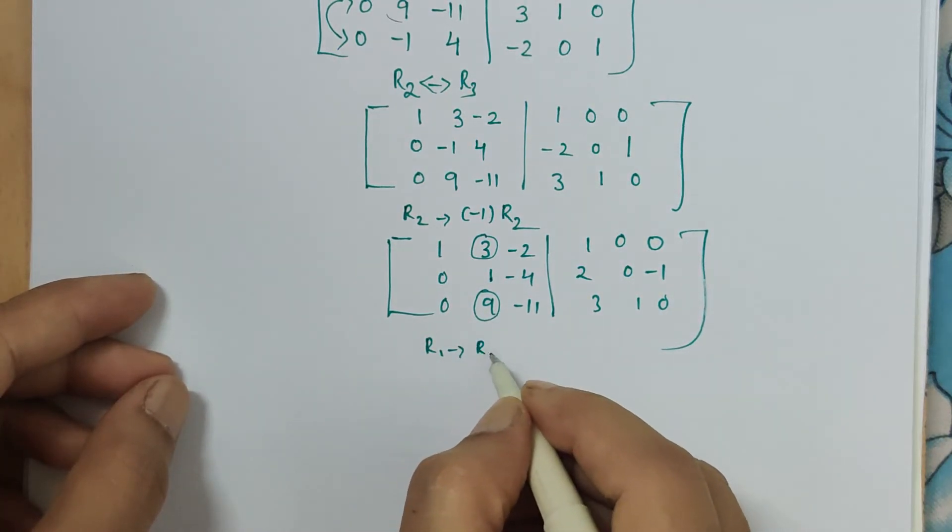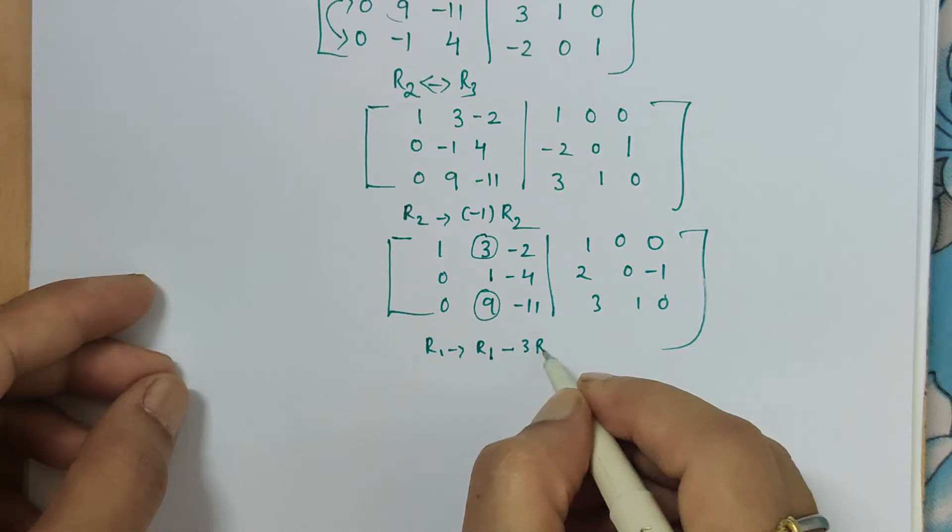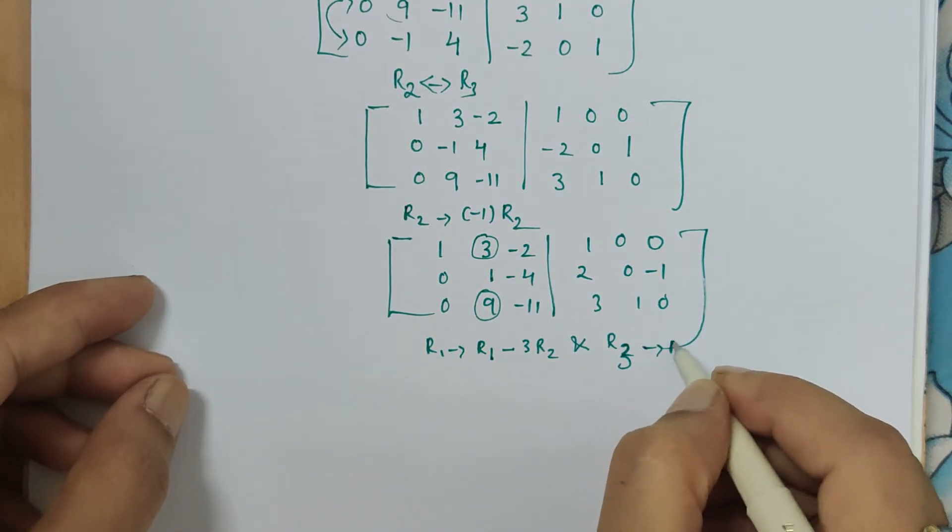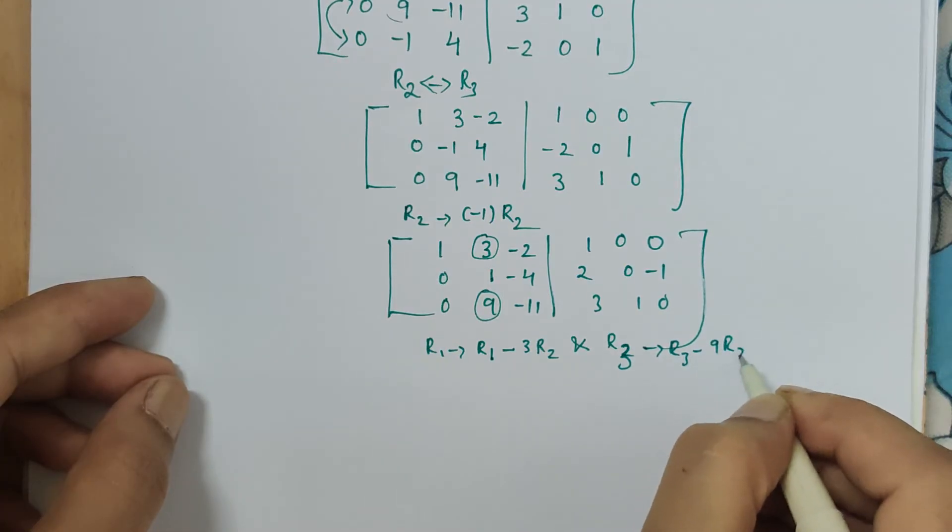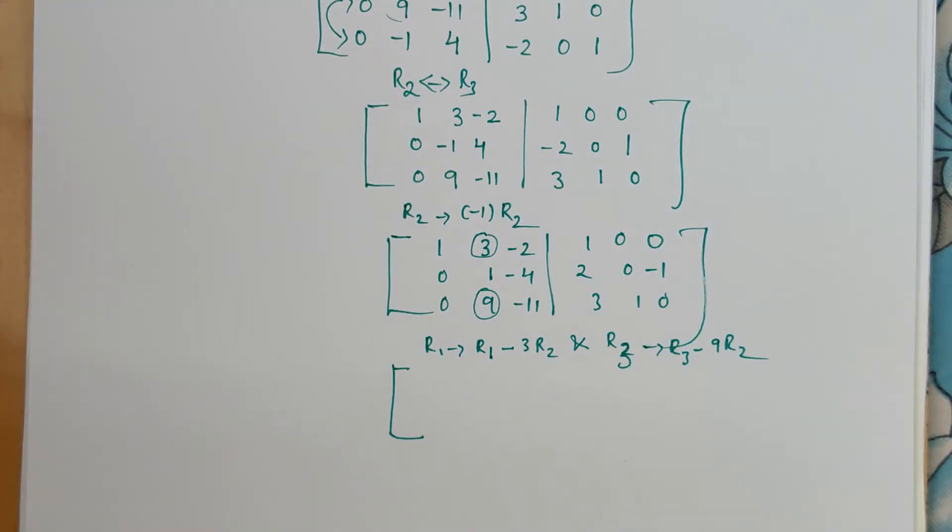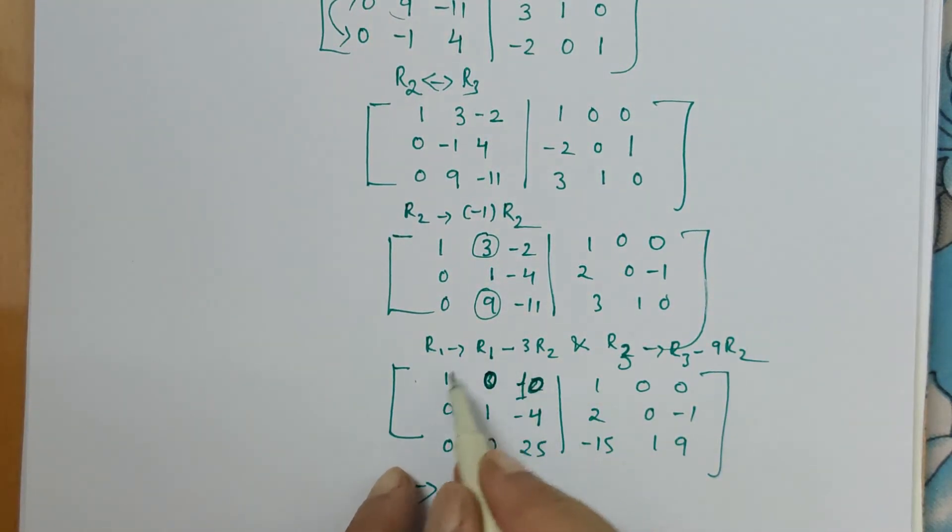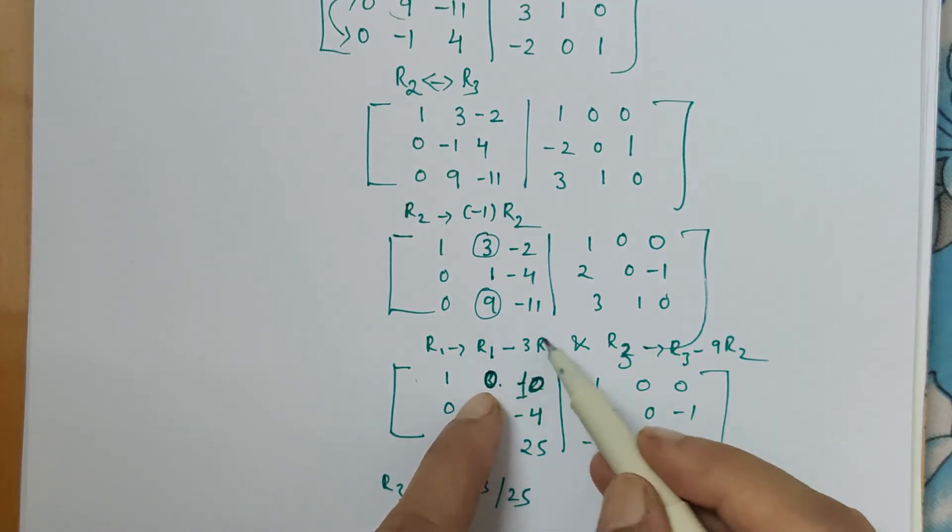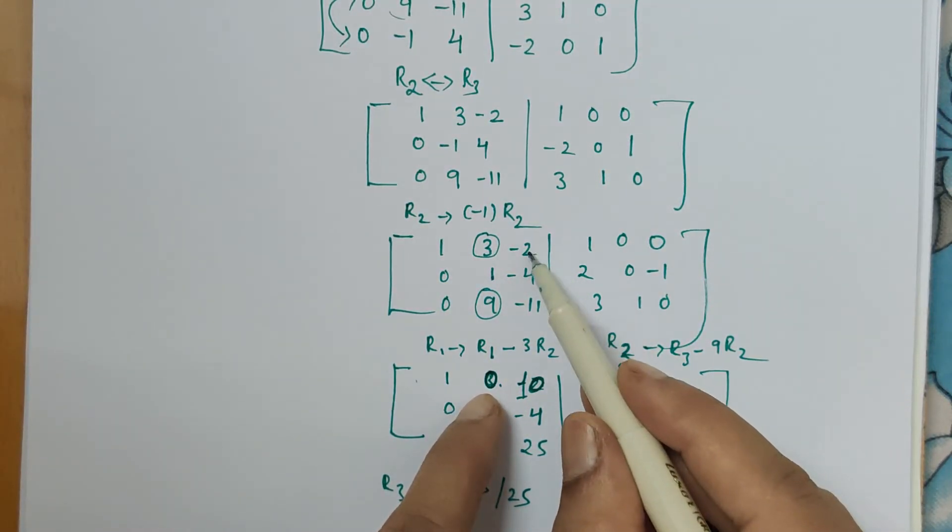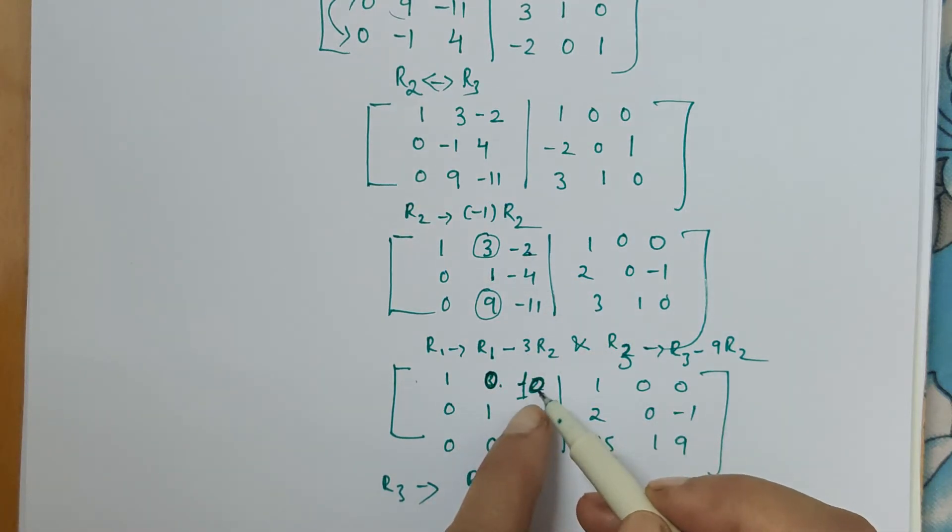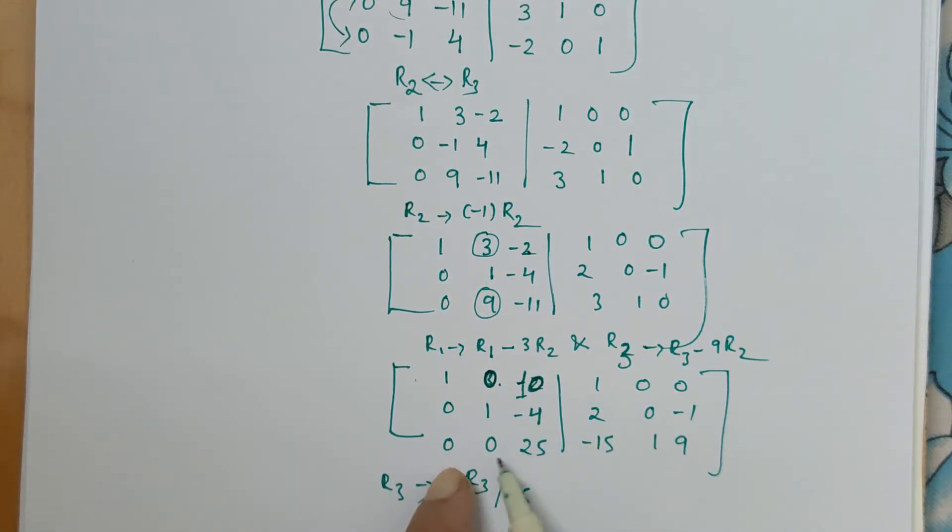Now easily we can make this as 0 and this as 0 using the second row element. So in first row R1 minus 3R2 and R3 minus 9 times R2, keeping second row constant, making changes in first and third row. This becomes, we get this matrix. The above entry we got 0, and by applying this operation R1, which is minus 2 plus 12, it gives 10. Similarly, second row is constant and we get the third row.